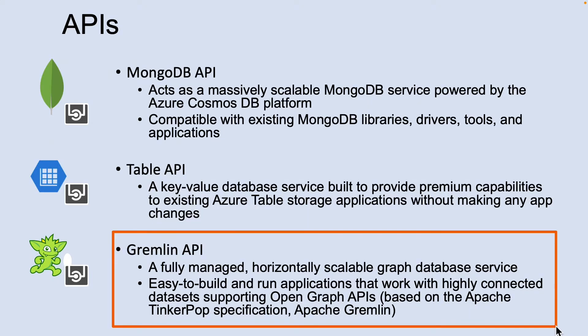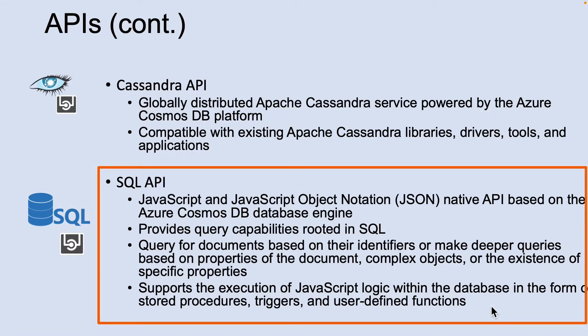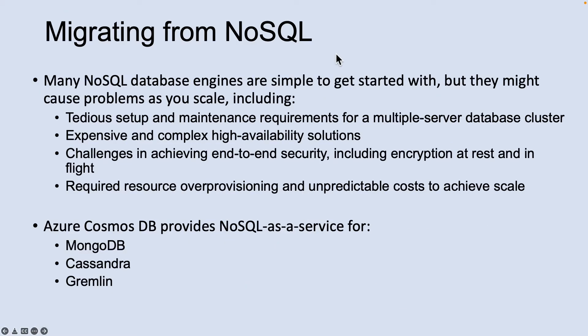The Cassandra API in Azure Cosmos DB is a globally distributed Apache Cassandra service powered by the Azure Cosmos DB platform, compatible with existing Apache Cassandra libraries, drivers, tools, and applications. The SQL API in Azure Cosmos DB is a JavaScript and JSON native API based on the Azure Cosmos DB database engine.